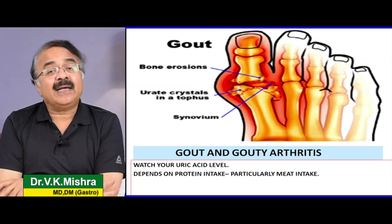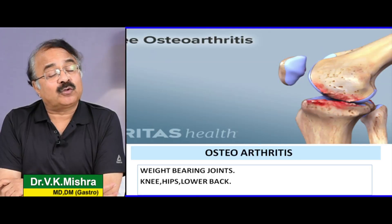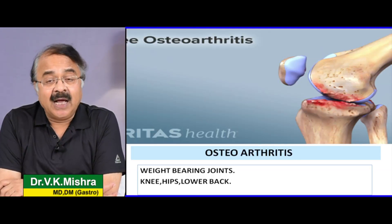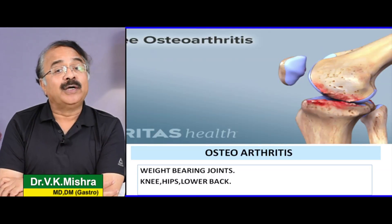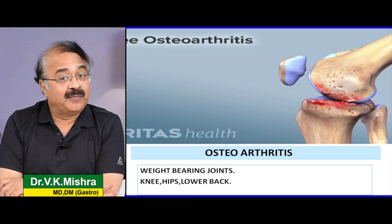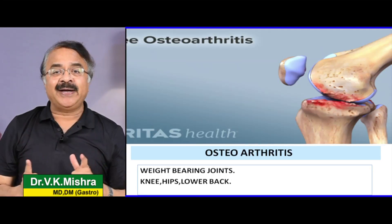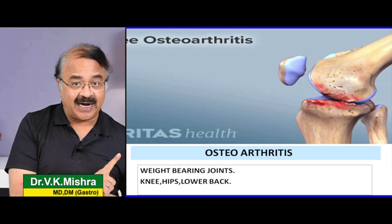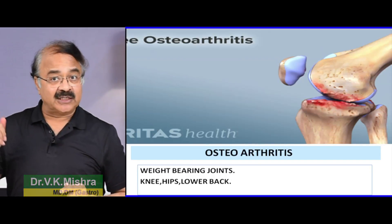Osteoarthritis — यह बढ़ती हुई age की ऐसी problem है जिसकी गिरफ्त में पूरी दुनिया है। आज की तारीख में knee transplant एक बहुत common operation है। अगर आप overweight हैं तो आपको osteoarthritis होगी — weight bearing joints जैसे knee joint, hip joint, lower back इनकी चपेट में आएंगे और सबसे ज़्यादा damage होते हैं। तो अगर joint pain से बचना है, osteoarthritis से बचना है, transplant से बचना है, तो obesity से बचने की जरूरत है।